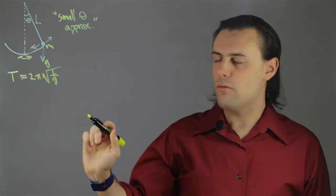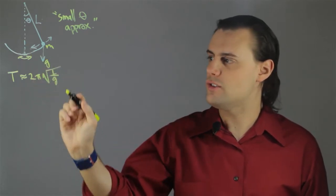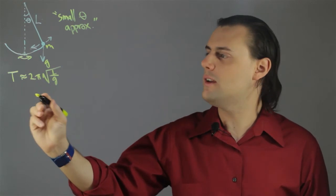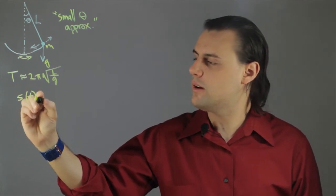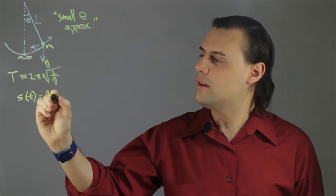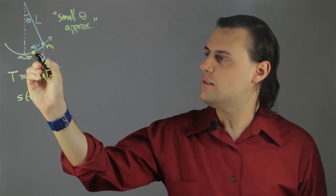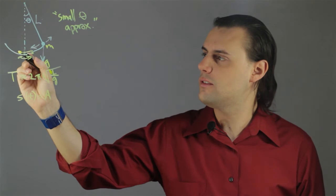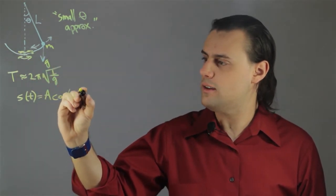So, without going through all the dirty work of deriving the actual equations of motion, I'll just write them down here. The position as a function of time of the particle is equal to an amplitude, meaning the initial condition, the initial point at which I set the mass, times cosine of ωt.